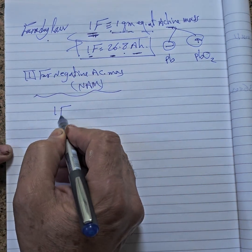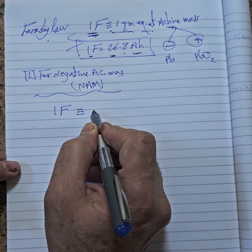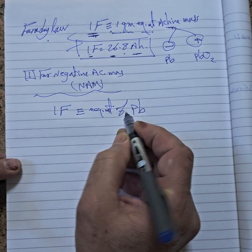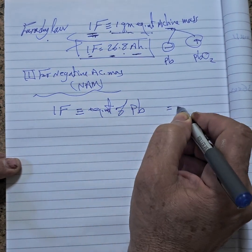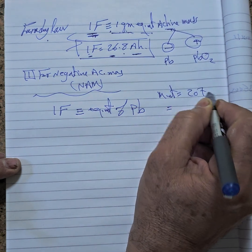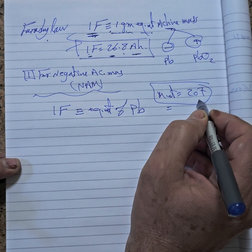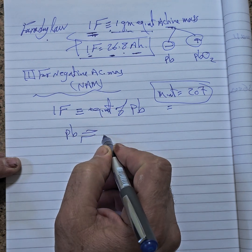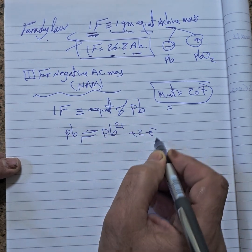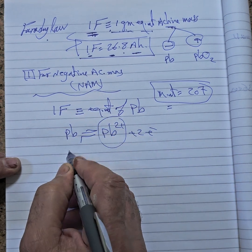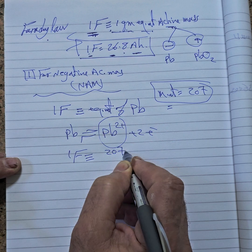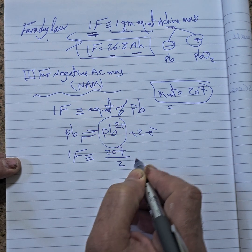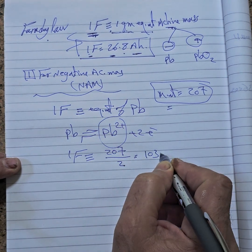Here, 1 Faraday is equivalent to the equivalent weight of lead. The molecular weight of lead is equal to 207, and the valence is 2. Therefore, 1 Faraday is equivalent to 207 divided by 2, which equals 103.5 grams.